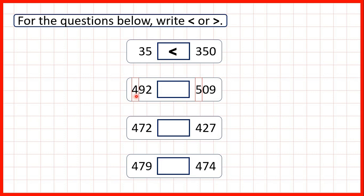This number has four in the hundreds, but this number has five. So 492 must be less than 509 because it has fewer hundreds. It doesn't matter that this number has nine tens and this number doesn't have any, because tens are smaller than hundreds.